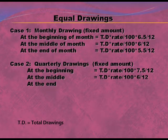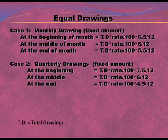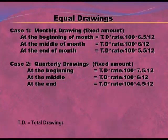At the middle of the quarter, the formula is: Total Drawing × Rate/100 × 4.5/12. The average period is again calculated as: time left after first drawing plus time left after last drawing, divided by two.